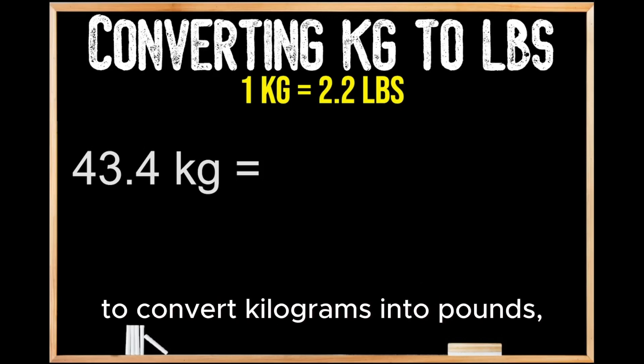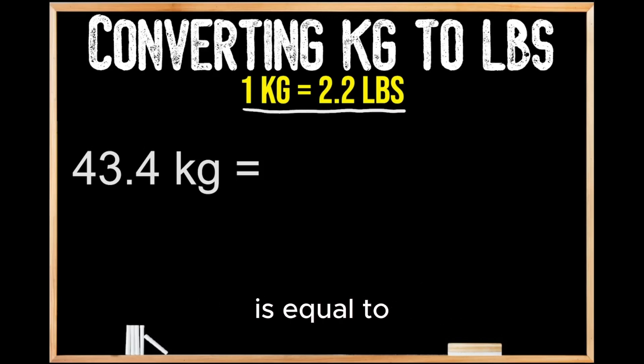And the conversion that we're going to use to convert kilograms into pounds is that one kilogram is equal to 2 and 2 tenths of a pound. So for us to convert our kilograms into pounds, we're going to multiply the value of our kilograms by 2 and 2 tenths.